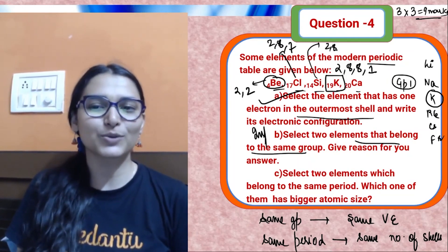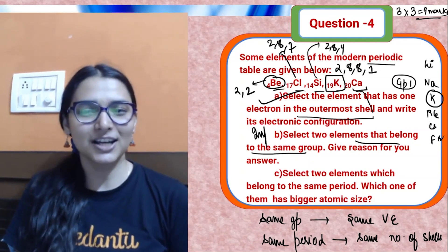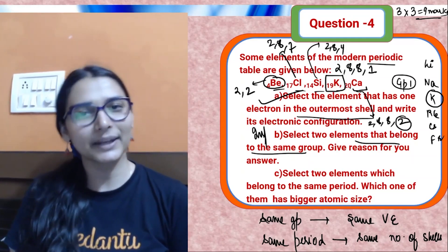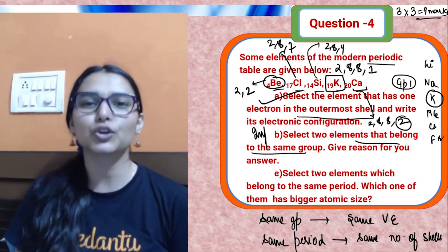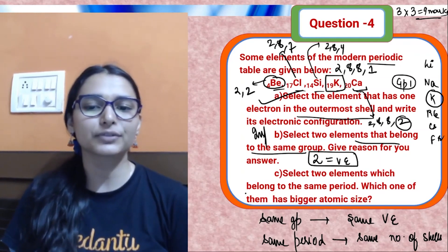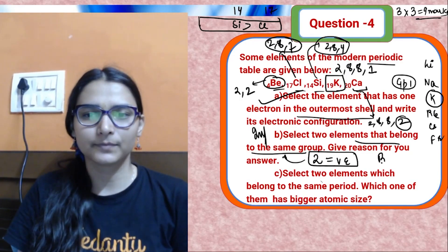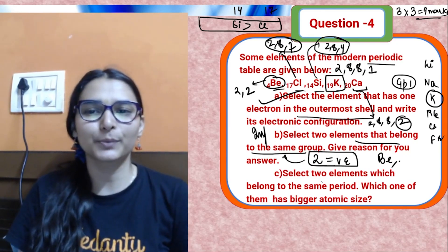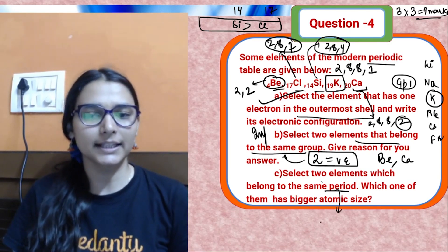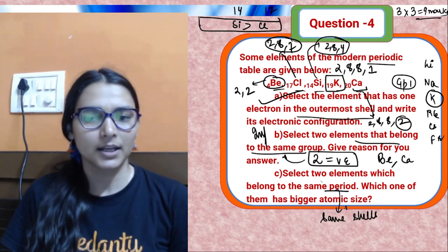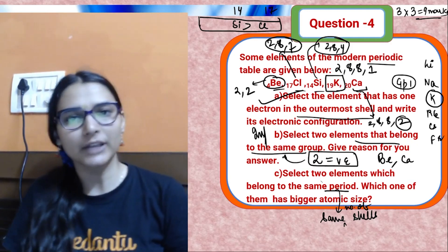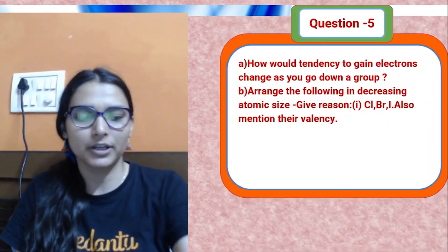Part two: select two elements that belong to the same group. Elements in the same group have the same number of valence electrons; elements in the same period have the same number of shells. Configurations: beryllium = 2,2; fluorine = 2,7; silicon = 2,8,4; calcium = 2,8,8,2. Beryllium and calcium both have two valence electrons, so they belong to Group 2 — same group.